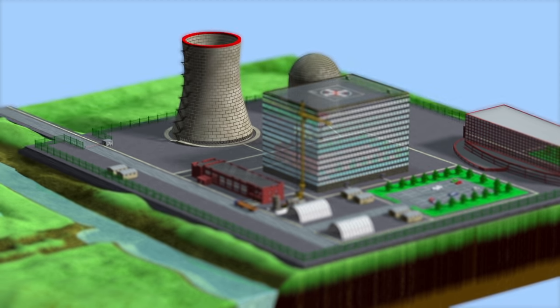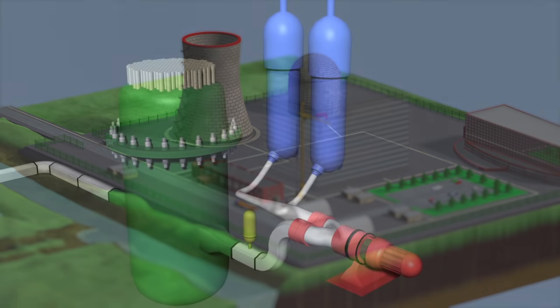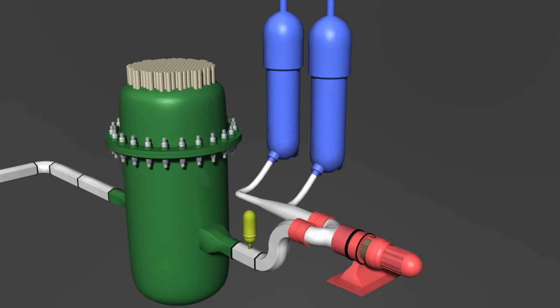The following is a description of the most important components of a nuclear power plant that uses a pressurized water reactor. In the reactor pressure vessel, the nuclear reaction and the associated release of thermal energy takes place.